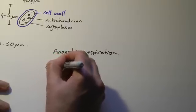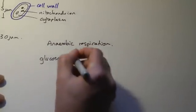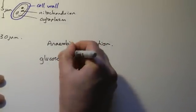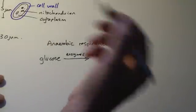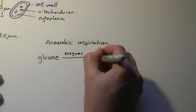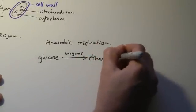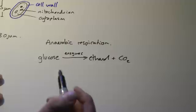The formula for it, we use glucose, and it is broken down by enzymes, or respired by the enzymes, to give us ethanol, alcohol, and carbon dioxide, CO2.